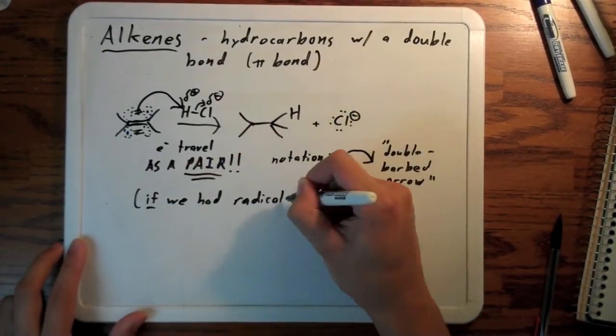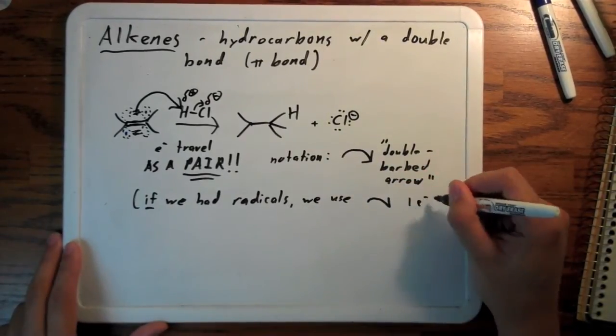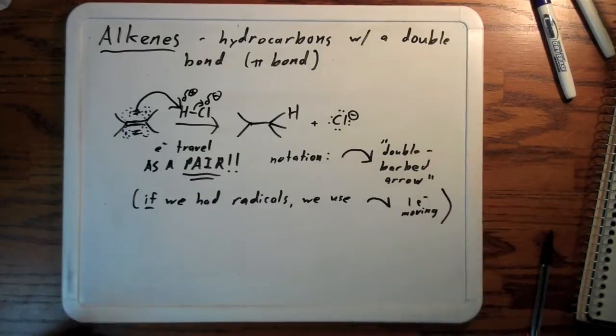What's less common is radical chemistry in which only one electron moves. In that case, you use a single barbed arrow. But we don't need to talk about that right now.